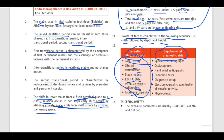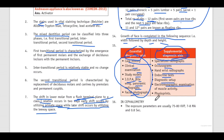Supplemental diagnostic aids include: specialized radiographs, occlusion grams, hand-wrist radiographs, endocrine tests, diagnostic setup, electromyographic examination of muscle activity, and physio prints.